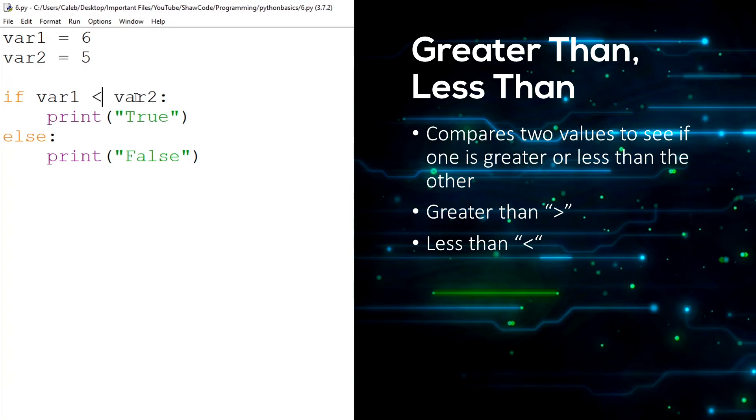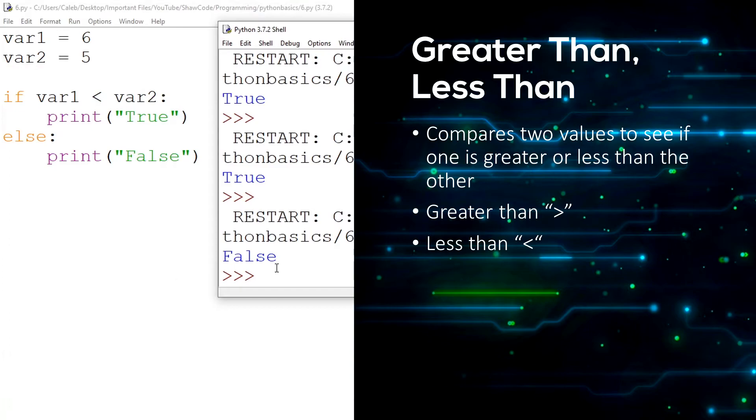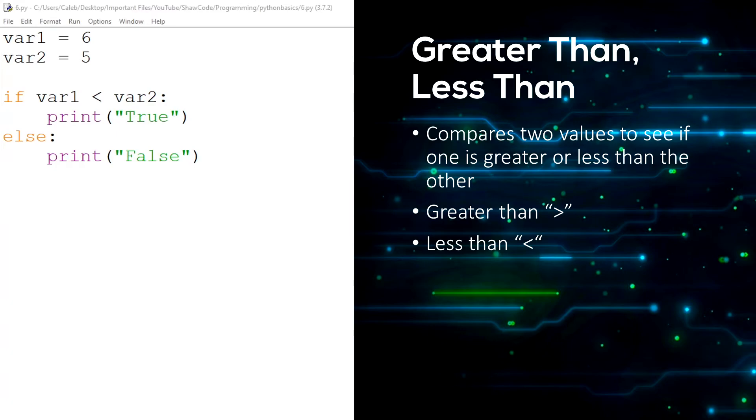And let's just do less than. As you can see, it prints out false because var1 is not less than var2. So basically, greater than and less than just compares the two values to see if one is greater or less than the other.